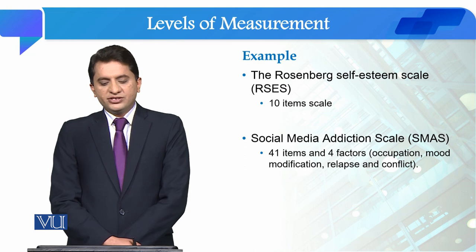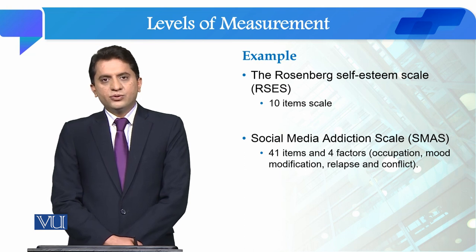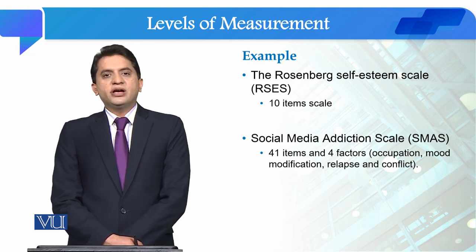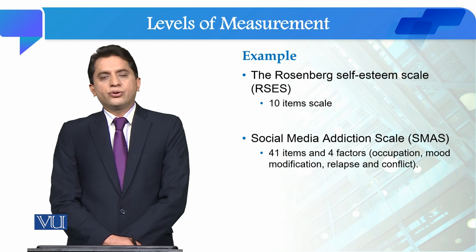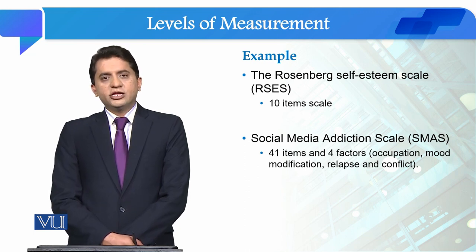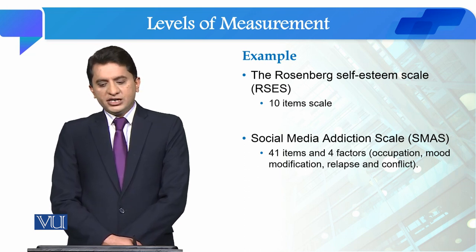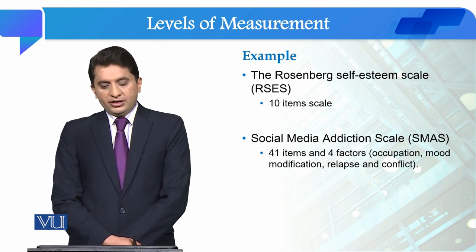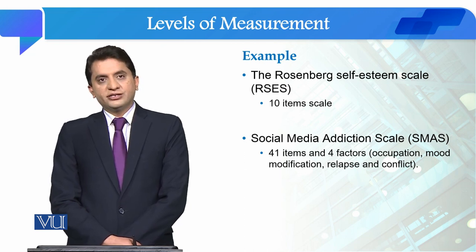Another example is the Rosenberg Self-Esteem Scale. Cronbach's Alpha gives an overall value for its 10 items, working across all 10 items. There is also a social media scale that is 41 items with 4 sub-factors.